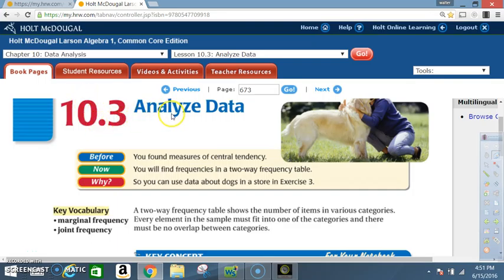Section 10.3 Analyze Data. Before you found measures of central tendency. Now you will find frequencies in a two-way frequency table.